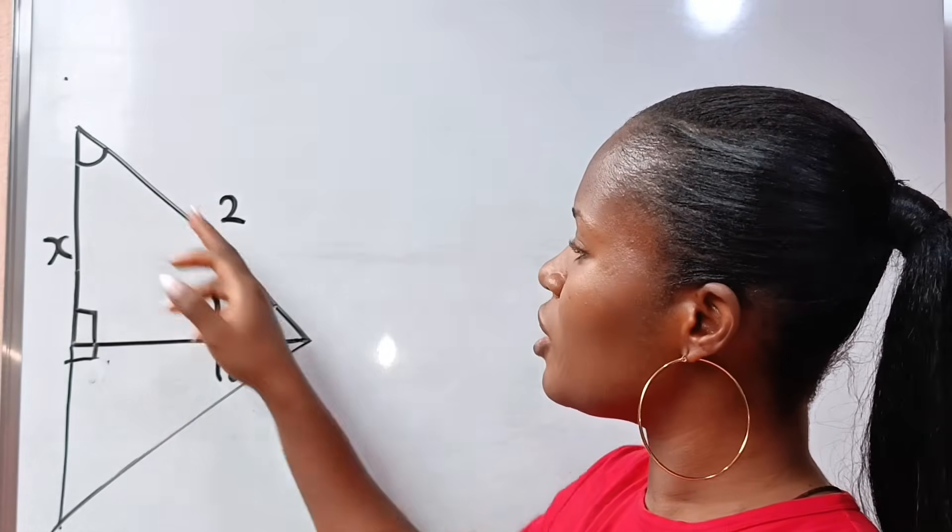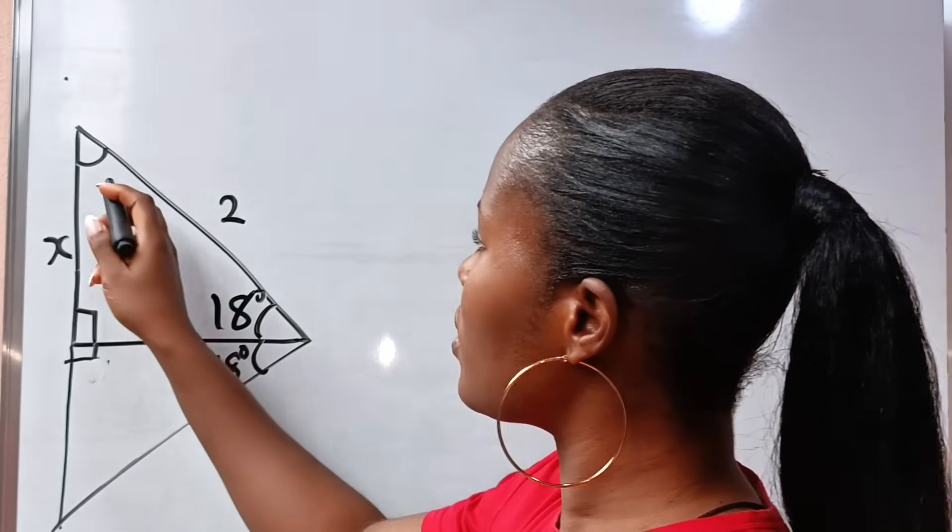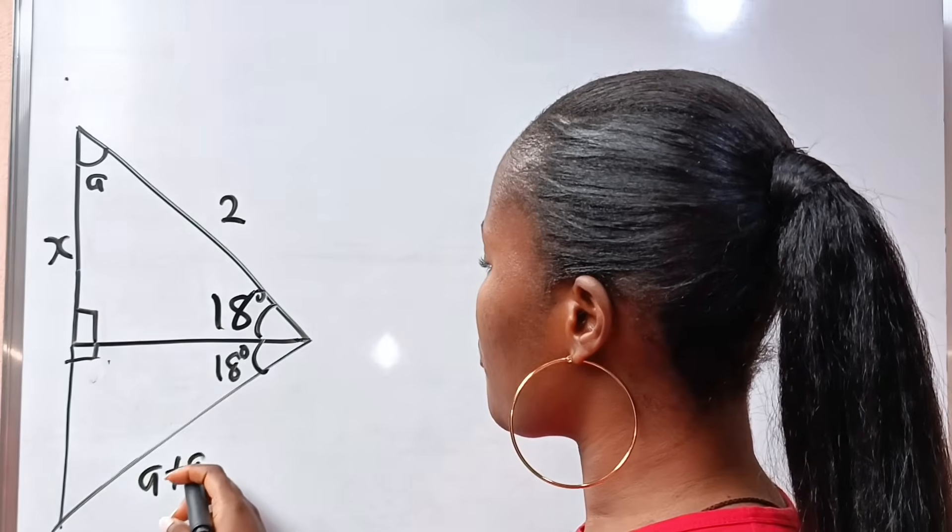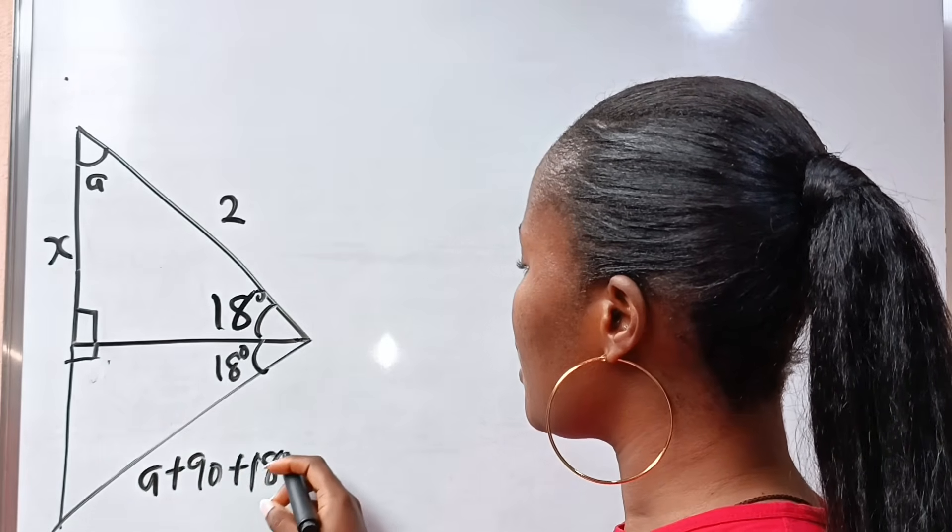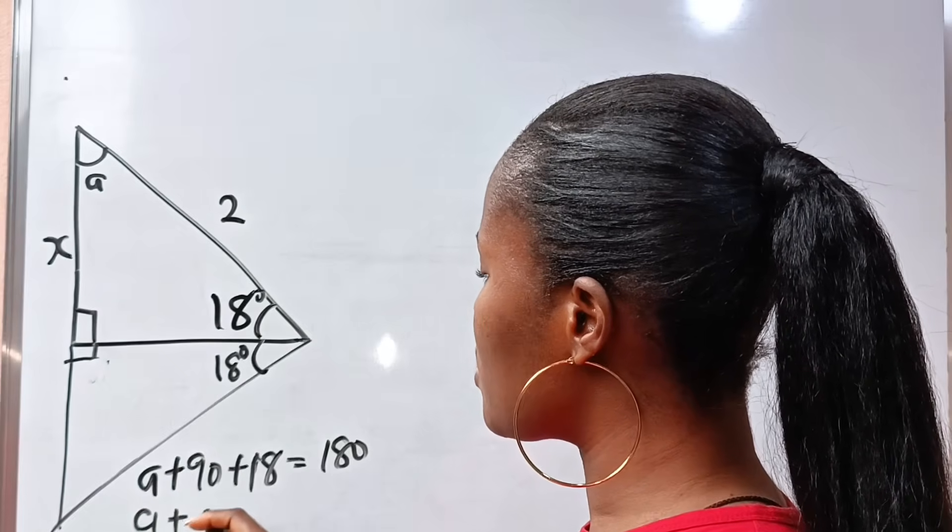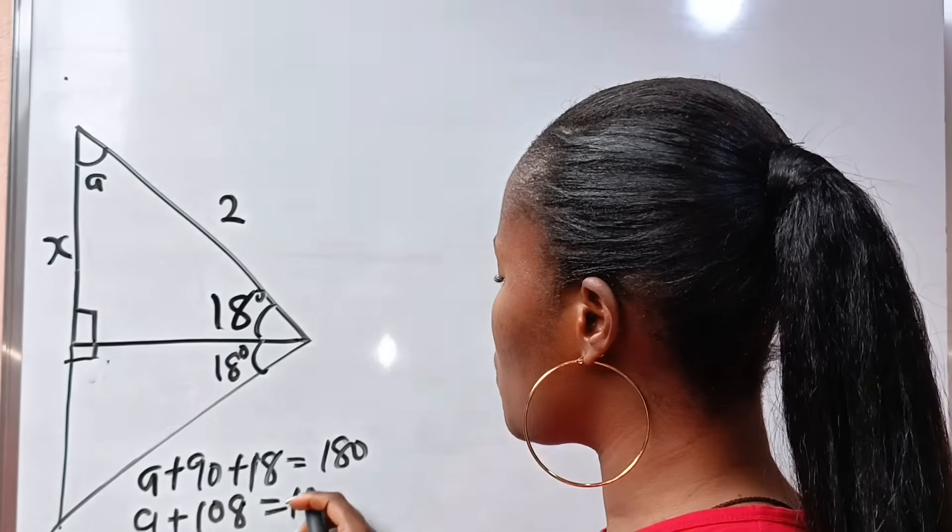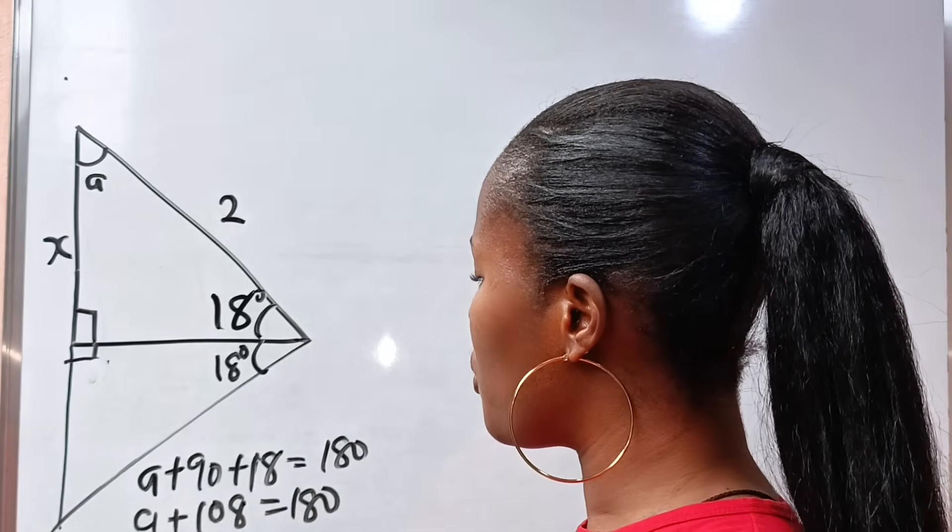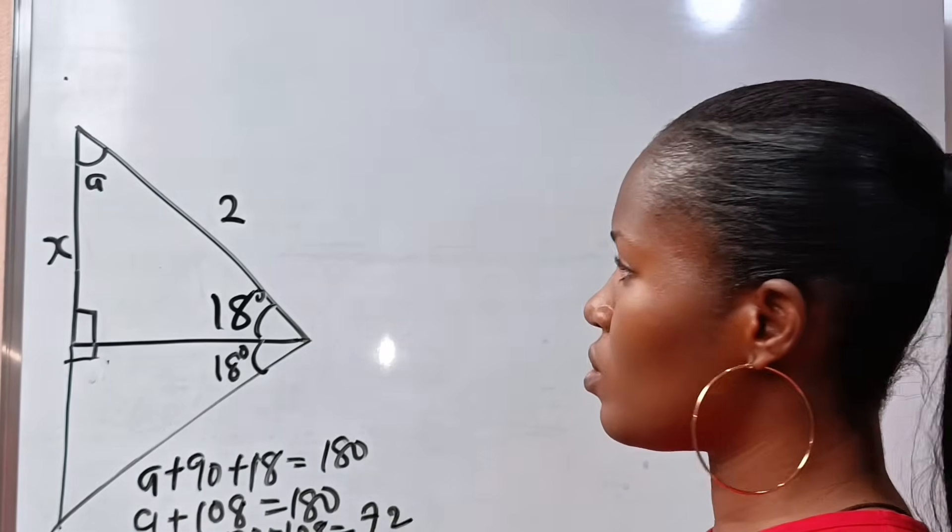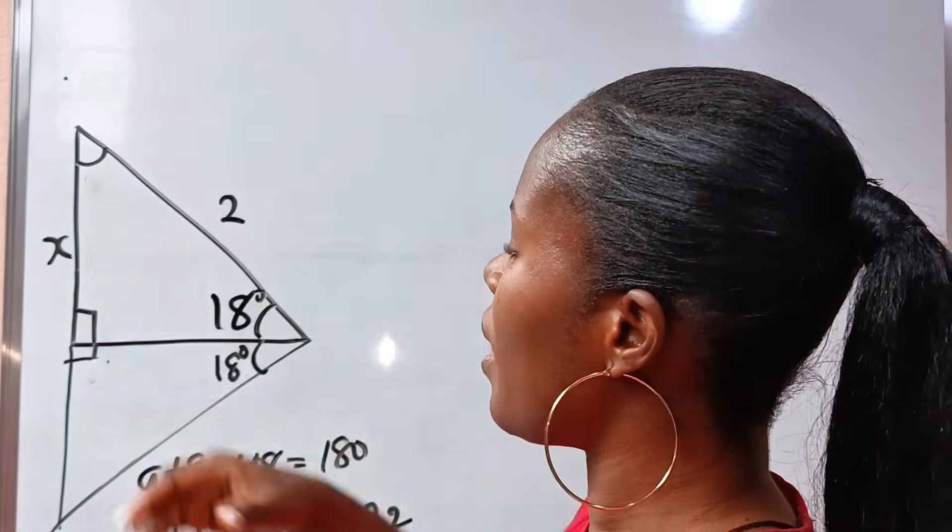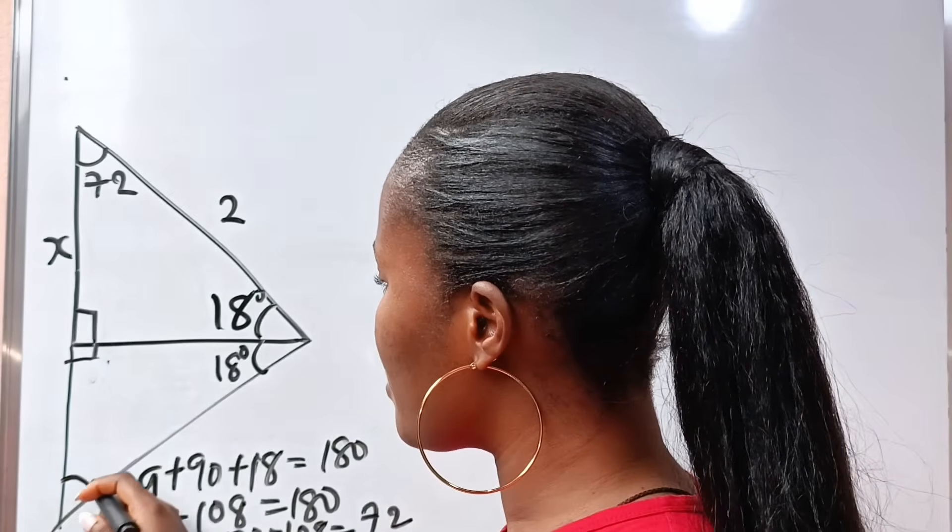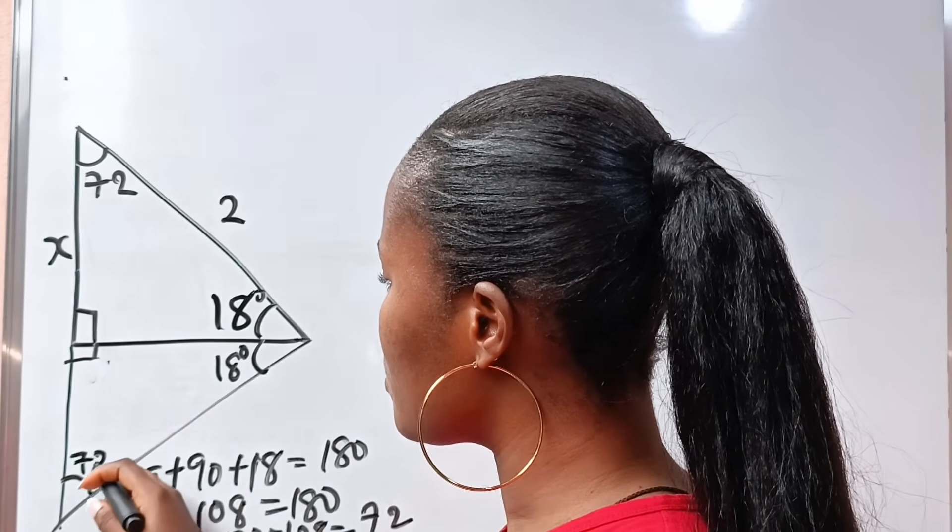The sum of angles in a triangle is 180. So if we call this angle A, it means that A plus 90 plus 18 is equal to 180. A plus 108 is equal to 180. So A will be equal to 180 minus 108, which will be 72. That means that the angle we have here is 72 degrees.